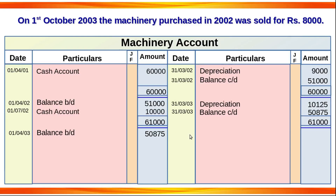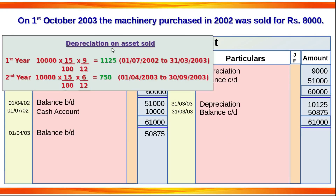For the asset sold, depreciation will be calculated and credited. In the first year, Rs. 1,000 depreciation was charged. The depreciation for the second year on the machinery purchased in 2002 is also calculated.